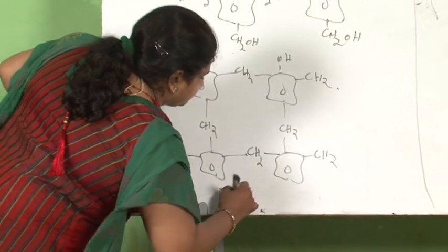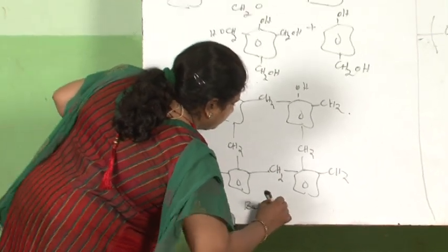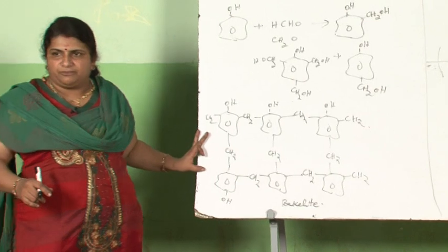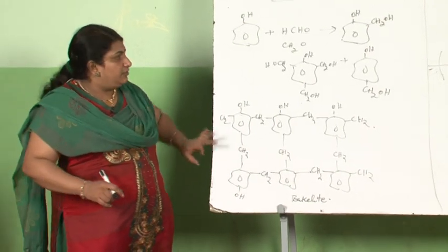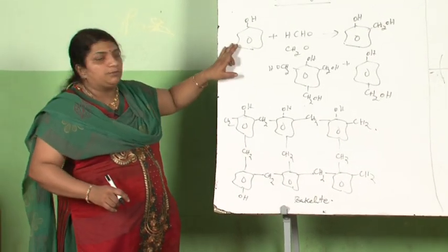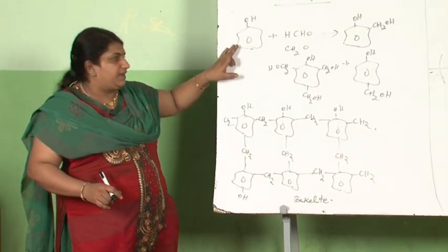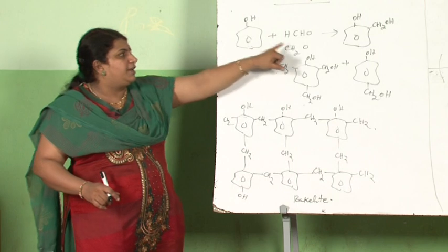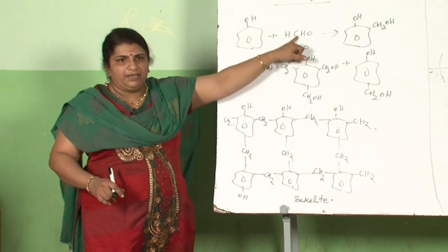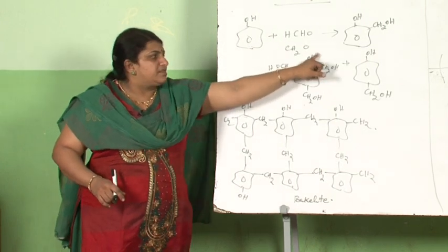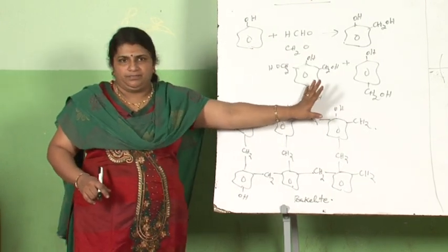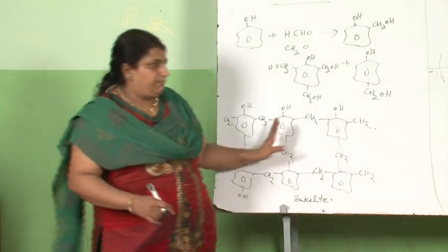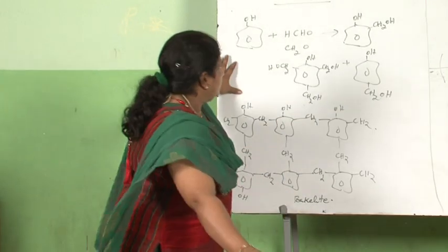Normally you will not be asked to draw the structure of Bakelite. You will be asked what are the monomers of Bakelite. The monomers are phenol and formaldehyde. If you are able to write the first step, that is okay — this is the Bakelite structure.